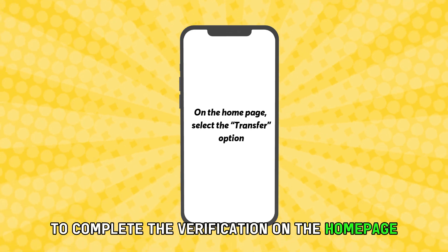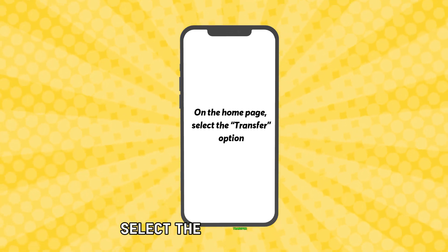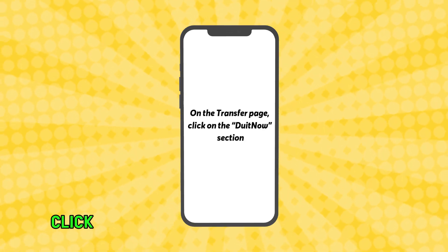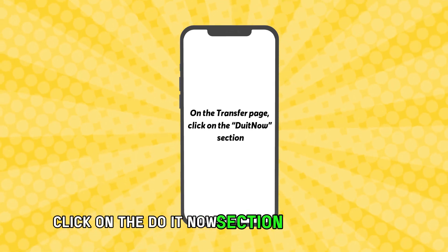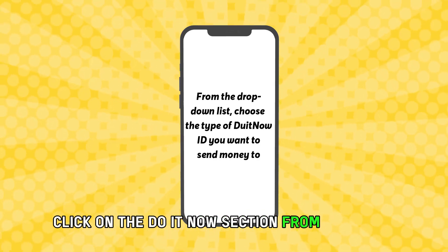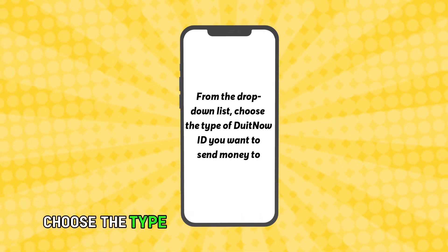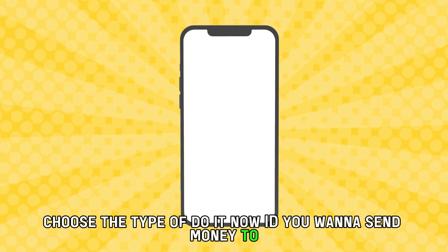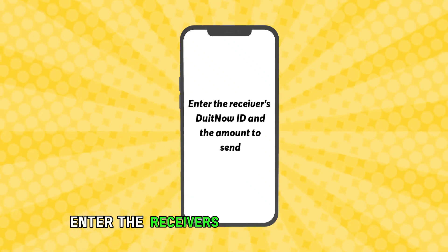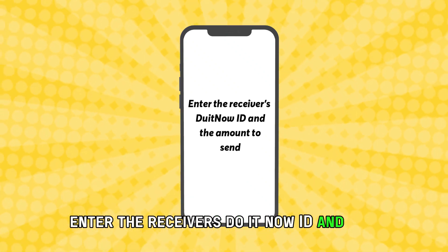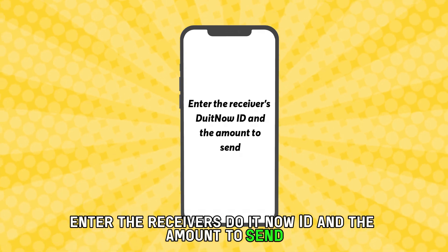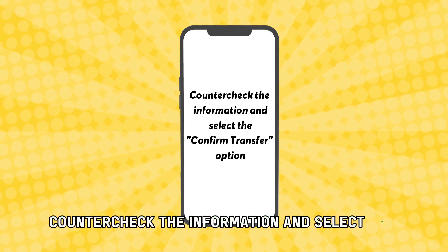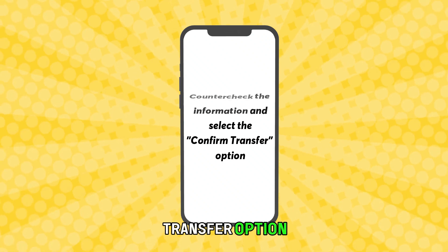On the home page, select the Transfer option. On the Transfer page, click on the Do-It-Now section. From the drop-down list, choose the type of Do-It-Now ID you want to send money to. Enter the receiver's Do-It-Now ID and the amount to send. Counter-check the information and select the Confirm Transfer option.